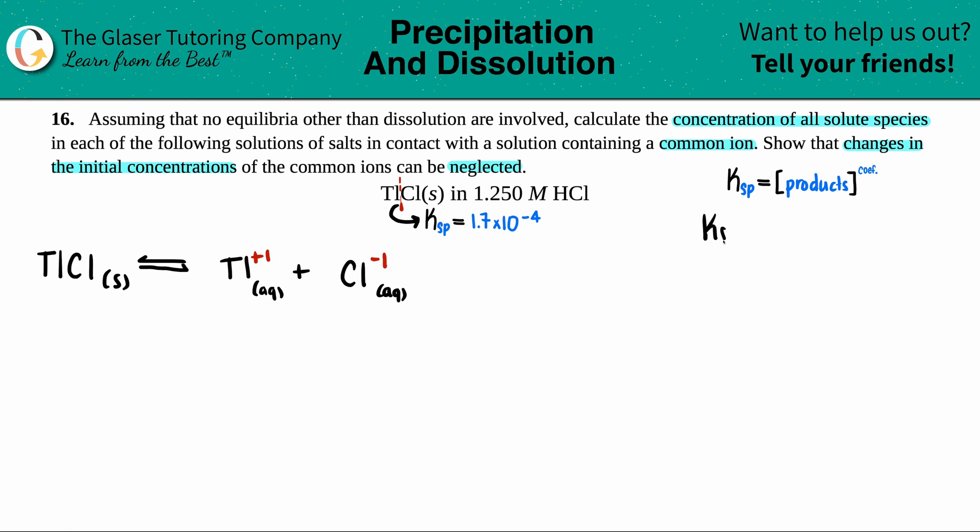So Ksp equals the concentration of TL plus one times the concentration of CL minus one. Just make sure that you're raising them to their coefficients. But for both of them, I don't see a coefficient in here, which just means that you have one of each. So you could raise both of them to the first, but that's just the same thing as what it is now. The Ksp value is 1.7 times 10 to the negative fourth, but we don't know what the concentration values of TL and CL are.